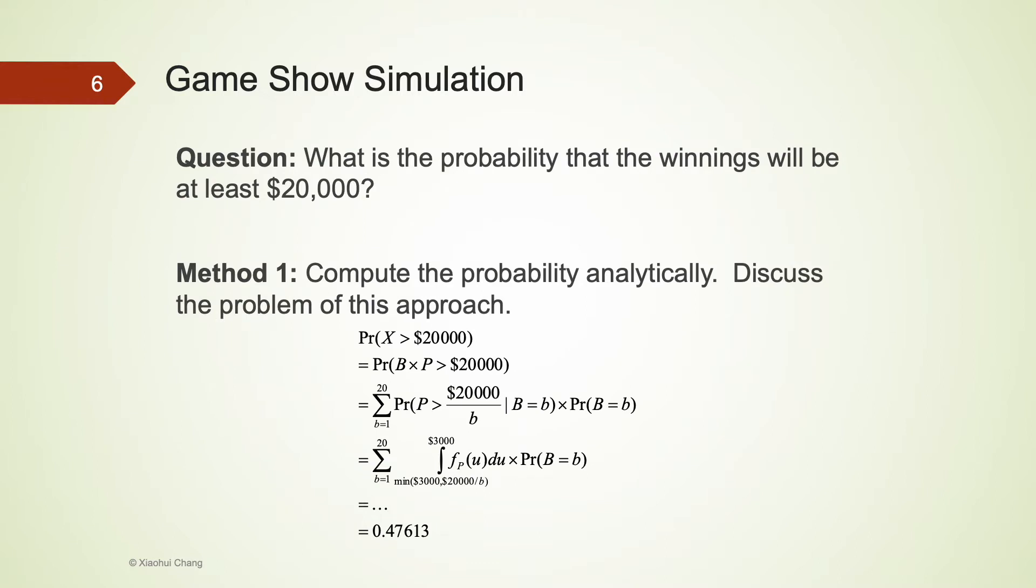There are several methods to calculate this probability of having a winning of at least $20,000. This probability can be computed analytically using calculus. This problem is challenging but doable. The exact probability is about 47.6%.